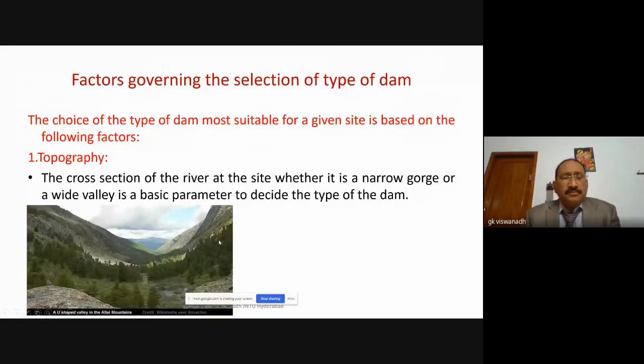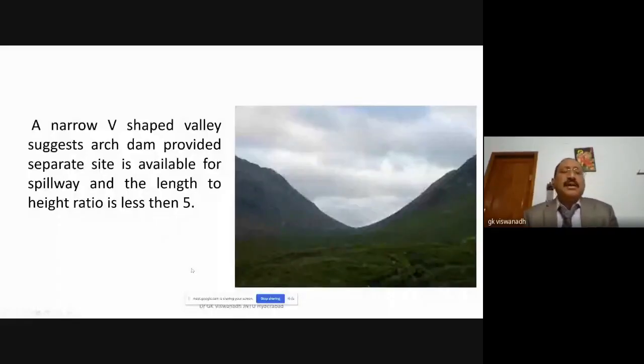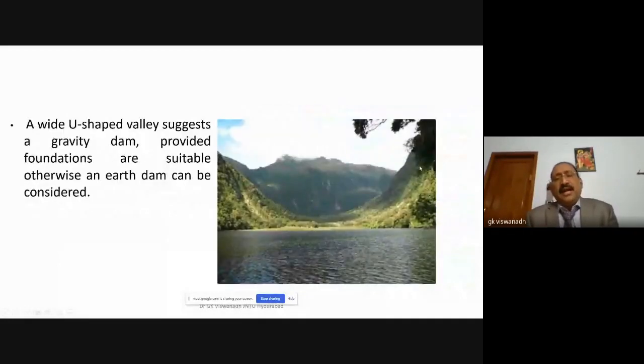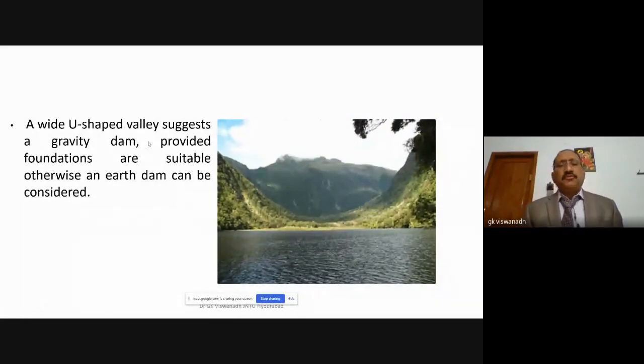This figure shows a wide valley in between hills connected together, with a small valley in between. This valley may be conveniently used for constructing a dam. A narrow V-shaped valley may be used to construct an arch dam. The spillway and the length-to-height ratio is less than 5. A U-shaped valley suggests a gravity dam provided foundations are suitable; otherwise, you have to go for an earth dam.